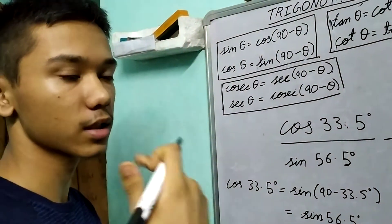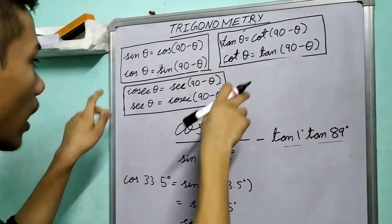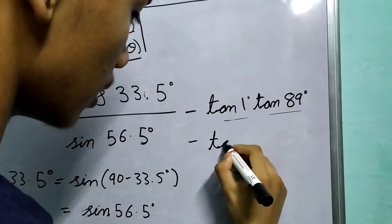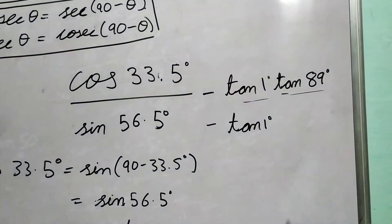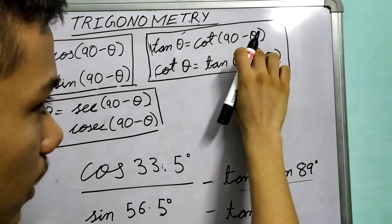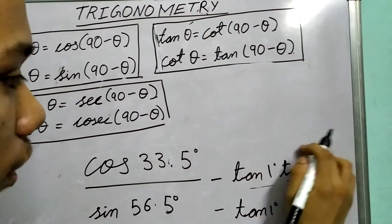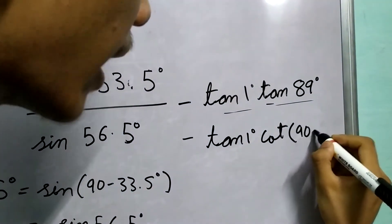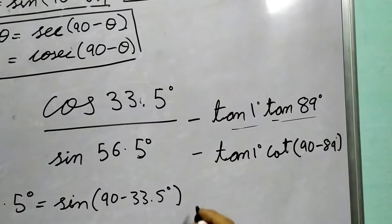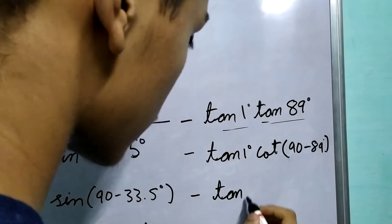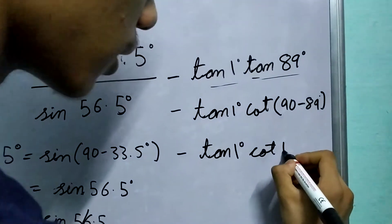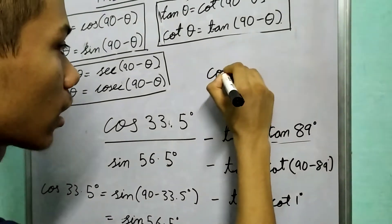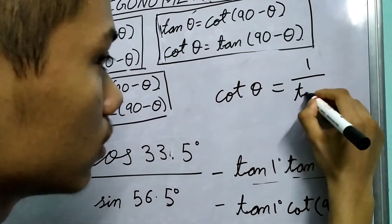We know that we need to use co-functions here. Which co-function has tan and cot in it? This one, of course. So we can write tan 89 degrees using the identity: tan of theta is equal to cot of 90 minus theta. So instead of theta let me write 89 degrees. We get it is equal to cot of 90 minus 89 degrees, which is cot of 1 degree. So we have tan 1 degree into cot of 1 degree. Now we can use another property: cot of some angle theta is equal to 1 upon tan theta.